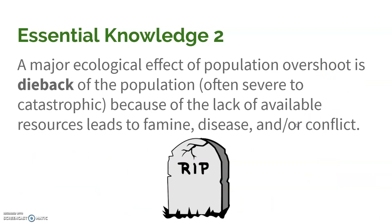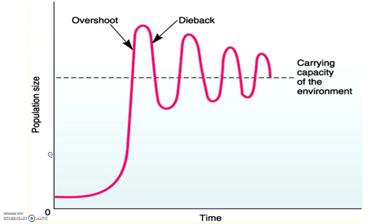When overshoot occurs, we see dieback happen. Because resources have been depleted and there are just too many individuals in the area, we see a tremendous amount of death occur. It's because of lack of available resources, but also things like famine, disease, and conflict between individuals for those resources.